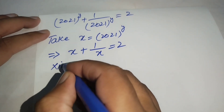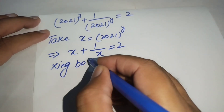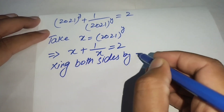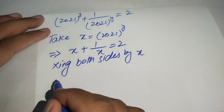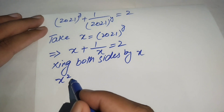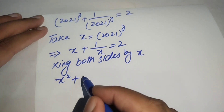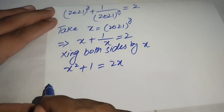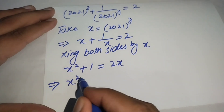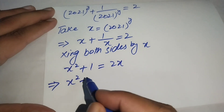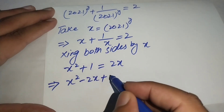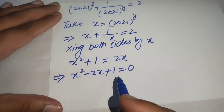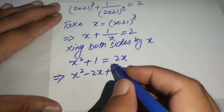We multiply both sides by x, giving us the quadratic equation x^2 + 1 = 2x. Rearranging both sides, we obtain x^2 - 2x + 1 = 0.